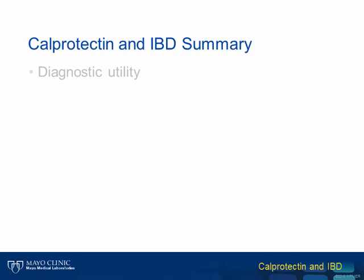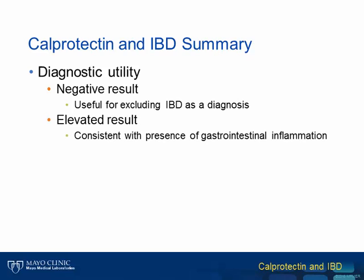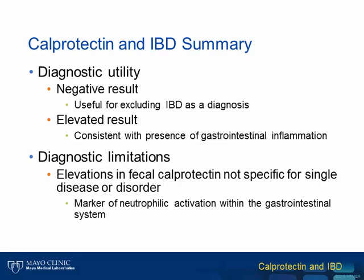In summary, related to diagnostic utility, a negative fecal calprotectin result is useful for excluding IBD and other inflammatory conditions as a diagnosis. In contrast, an elevated calprotectin result is consistent with the presence of gastrointestinal inflammation and should trigger further evaluation. This is the primary diagnostic limitation of fecal calprotectin, that an elevation is not specific for a single disease and is only a marker of neutrophil activation within the gastrointestinal system.